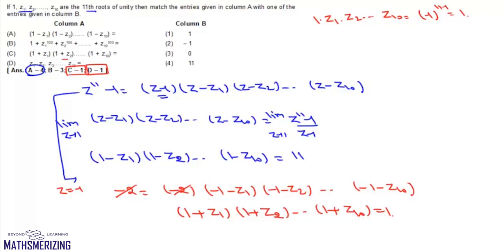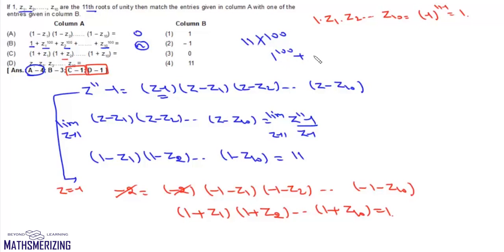For entry B: the sum of any powers of all the nth roots of unity is 0 if the power is not a multiple of N, and equals N if it is. Since 11 does not divide 100, we get 1^100 + Z1^100 + ... + Z10^100 = 0. So entry B matches with 3.